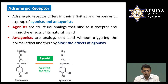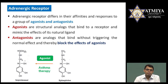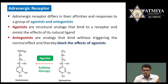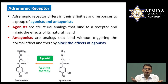Agonists mimic natural signal molecules and are responsible for continuation of the signal transduction pathway. A best example is isoproterenol, which is structurally similar to epinephrine and is used in asthma therapy. In asthma, epinephrine is required in large amounts but is not produced sufficiently, so isoproterenol is provided as a drug. The contrasting concept is the antagonist — antagonist is the reverse of agonist.